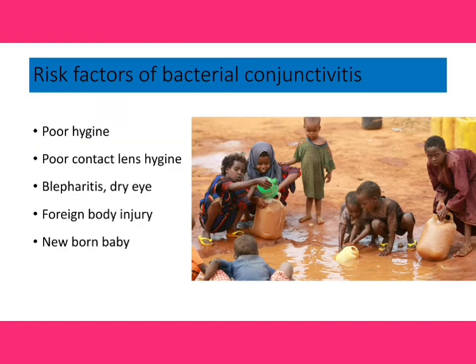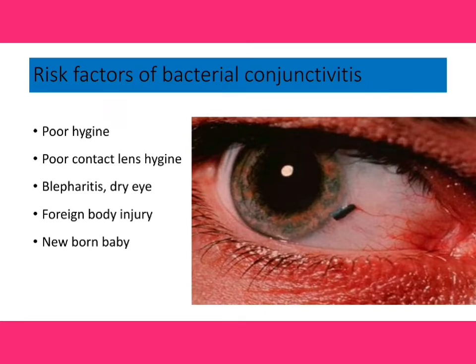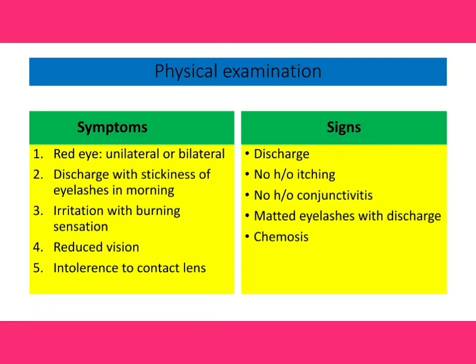The predisposing factors for bacterial conjunctivitis include poor hygiene — people living in slum areas with poor hygiene have weakened immunity and are more prone to infection by microorganisms. Poor contact lens hygiene, such as not following contact lens dos and don'ts or not cleaning the lens solution timely, also increases risk. Blepharitis, particularly ulcerative blepharitis caused by Staphylococcus aureus, is another factor, as Staphylococcus aureus is also a causative organism for bacterial conjunctivitis. Additionally, foreign body injury to the eye causes conjunctival epithelial disruption, which can lead to bacterial infection.